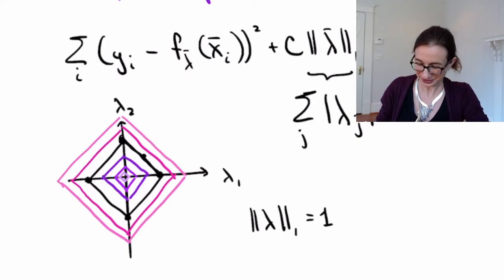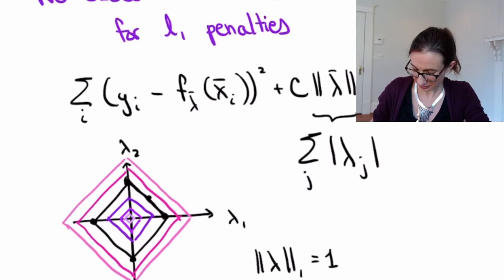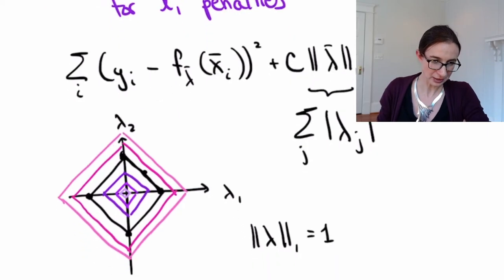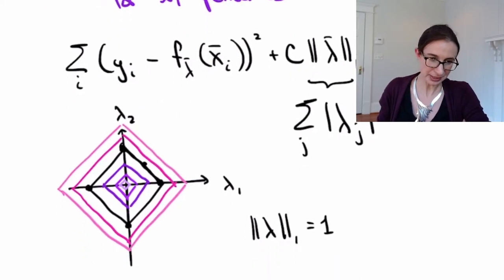Okay, so hopefully you get the idea from that. Now, so this is what the level sets of the regularization term are. And remember, we're trying to minimize the regularization term, but also we're trying to minimize the squared loss.